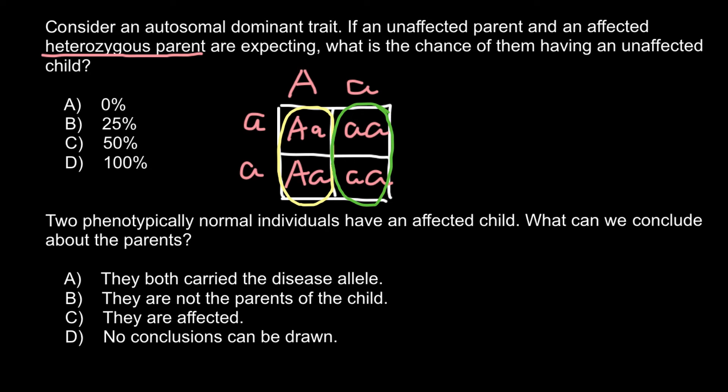As you see, 50% of the progeny would have this genetic disorder and 50% would be phenotypically normal. So the chances are 50%. And next question.